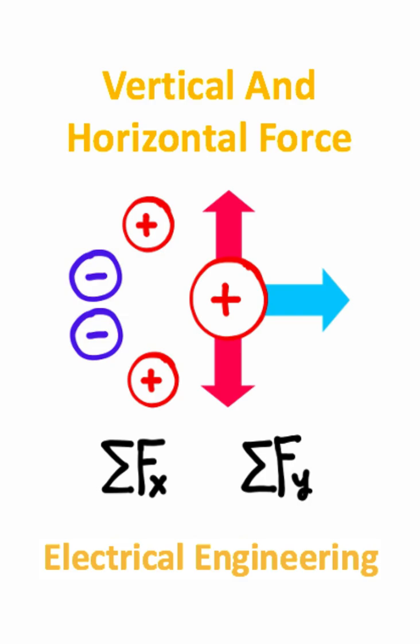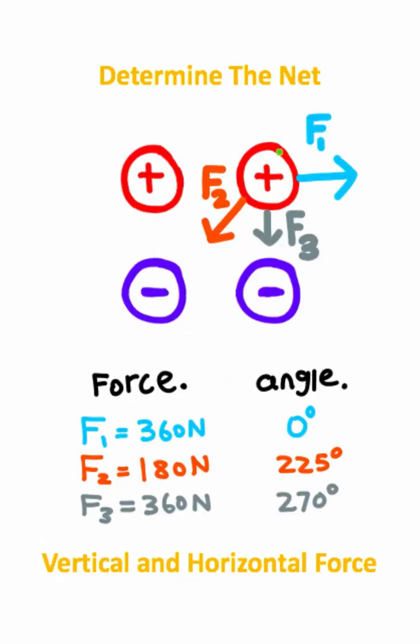We're going to calculate the net vertical and horizontal forces acting on a charge. We're looking at this upper right point charge, and we have the magnitudes of the force vectors and all the total angles of the force vectors.